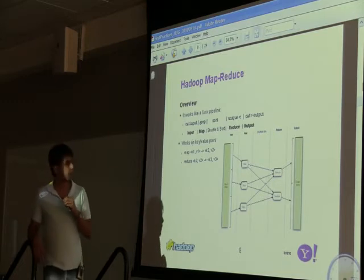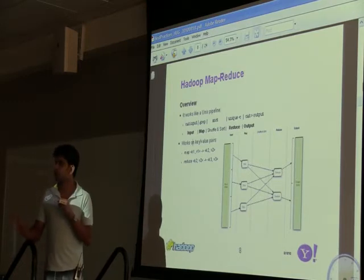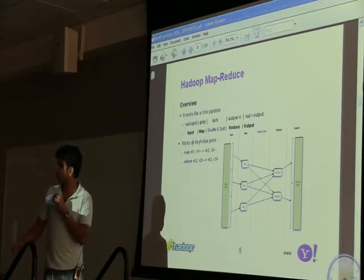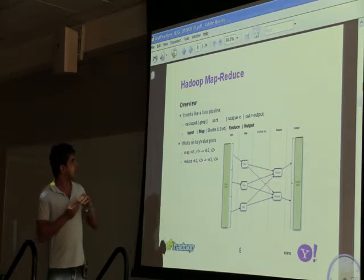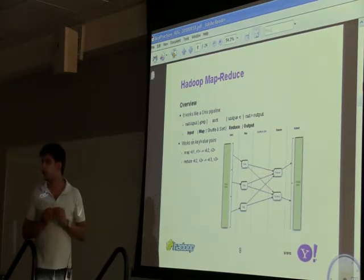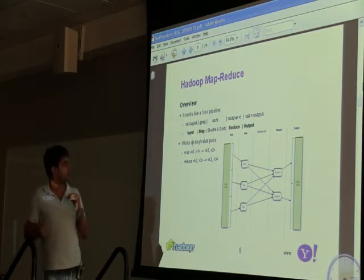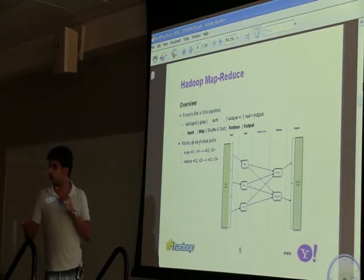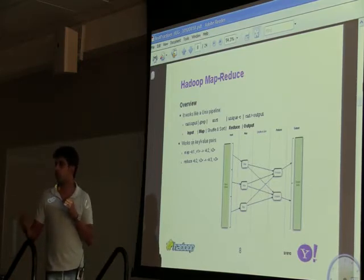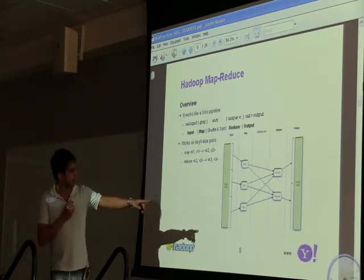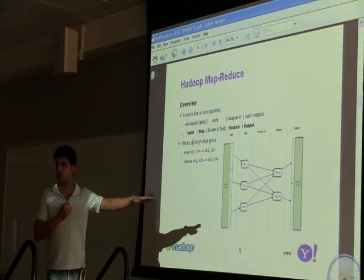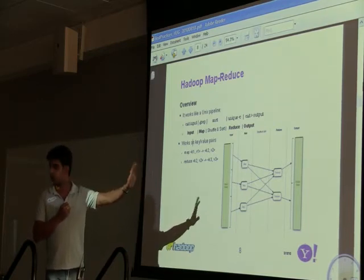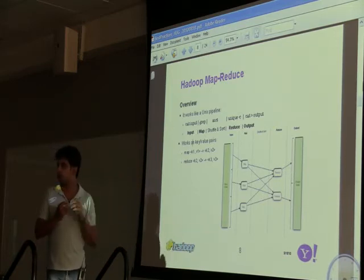Just a quick overview: MapReduce works sort of like a Unix pipeline. If you look at input, grep, sort, unique, you can directly map that to MapReduce. You have the input phase, the map phase, the shuffle and sort phase, the reduce phase, and the output phase. MapReduce works in key-value pairs: input keys and values, intermediate keys and values, output keys and values. The input is split up, you have multiple maps processing in parallel, and then the output of the maps gets shuffled over to the reducers — we call it the shuffle phase — and then the reducers write the outputs.